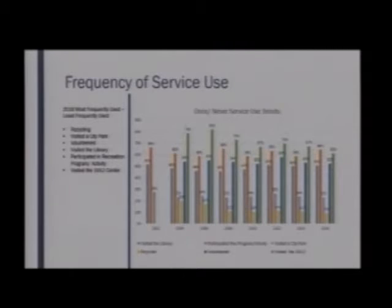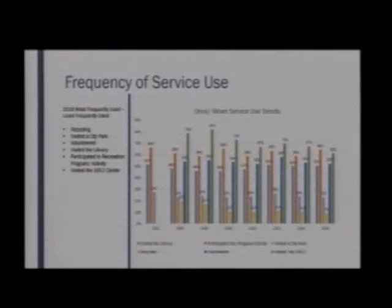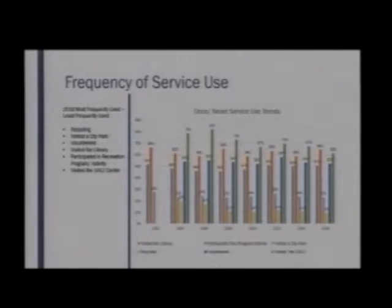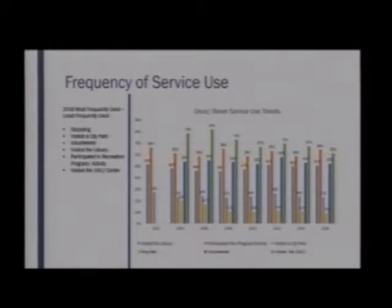This next slide talks about the frequency of service use based on visiting the library, recycling, participating in recreation programs, and so on. On the left you will see the most frequently used to the least frequently used in that order. The larger percentage items on the chart on the right represent results for once or never used the service. Most services remain within 1% or 2% from 2014. However, participation in recreation programs received 6% more responses of once or never used than 2014. Visiting the 1912 Center received the opposite — fewer responses indicating they had never or once used the service than prior years.